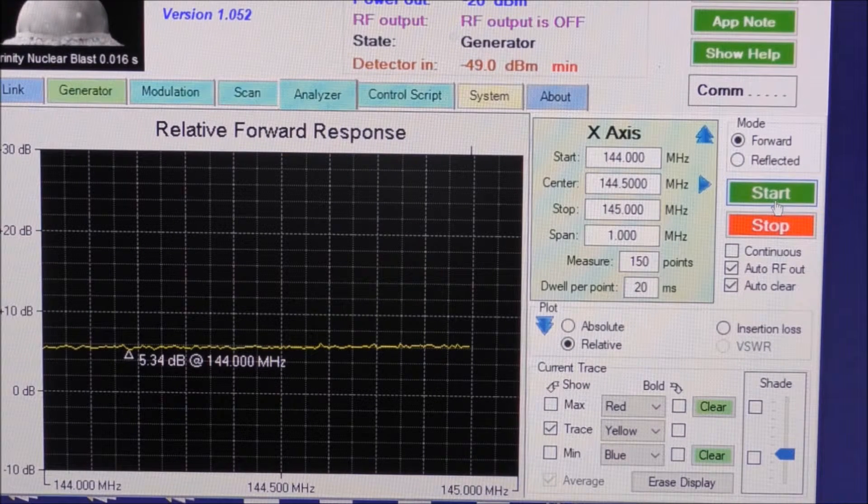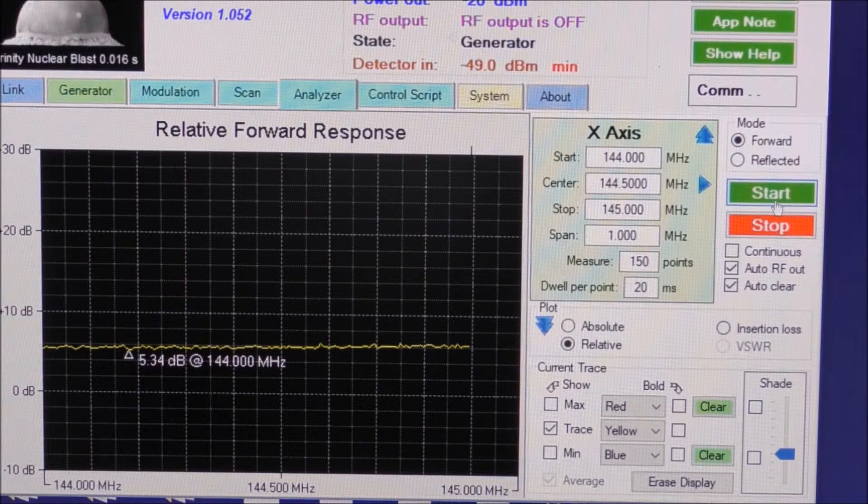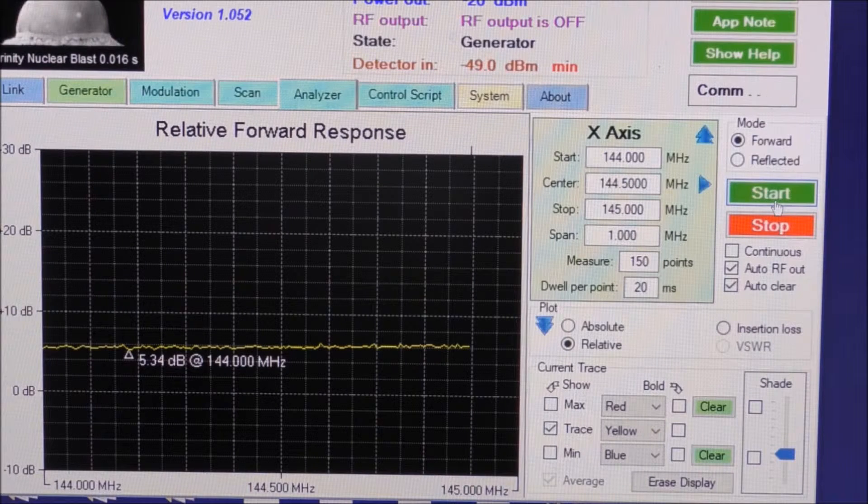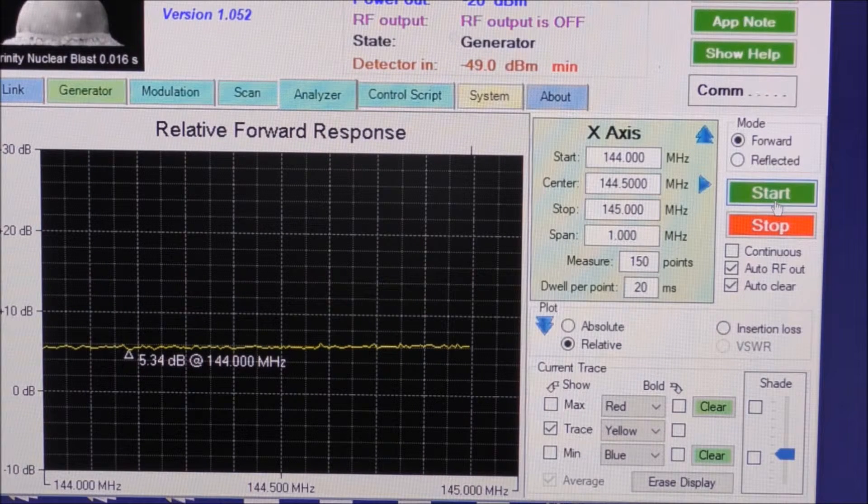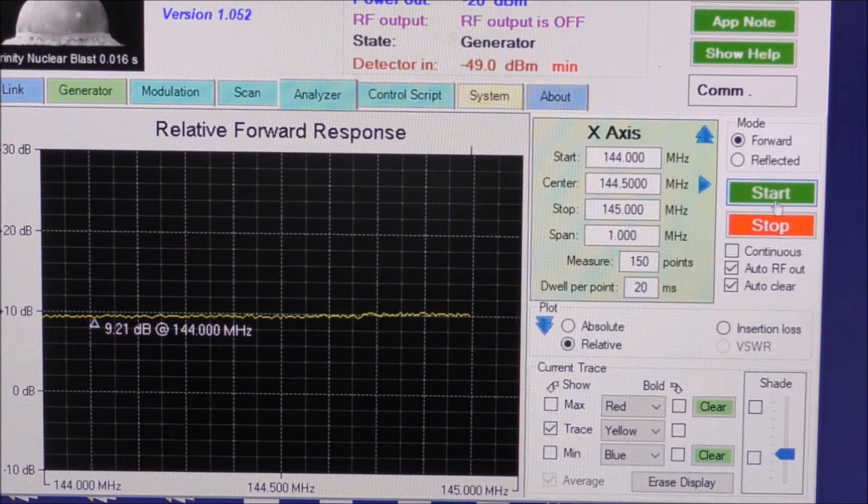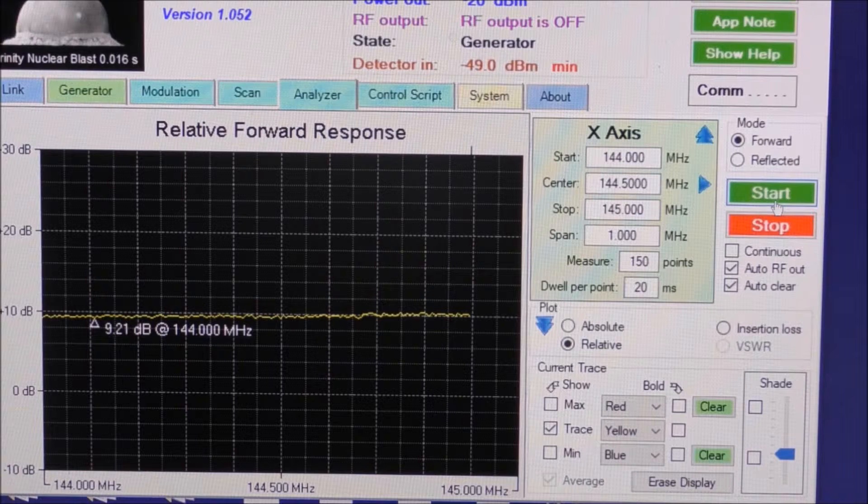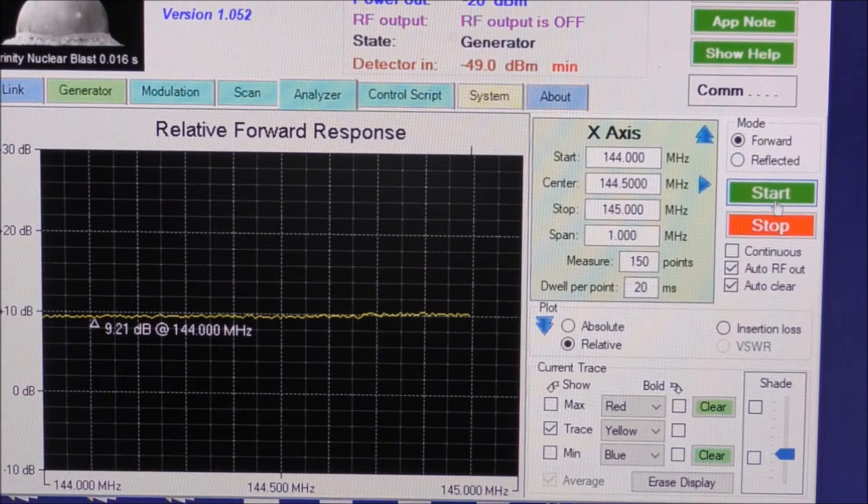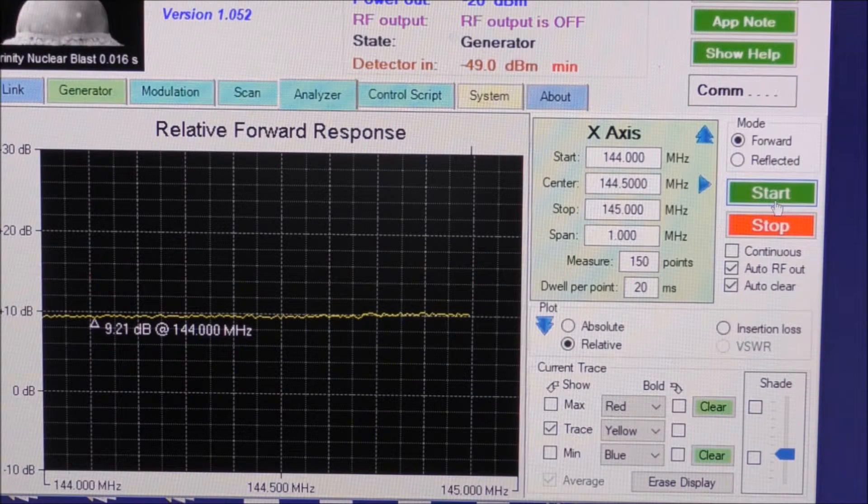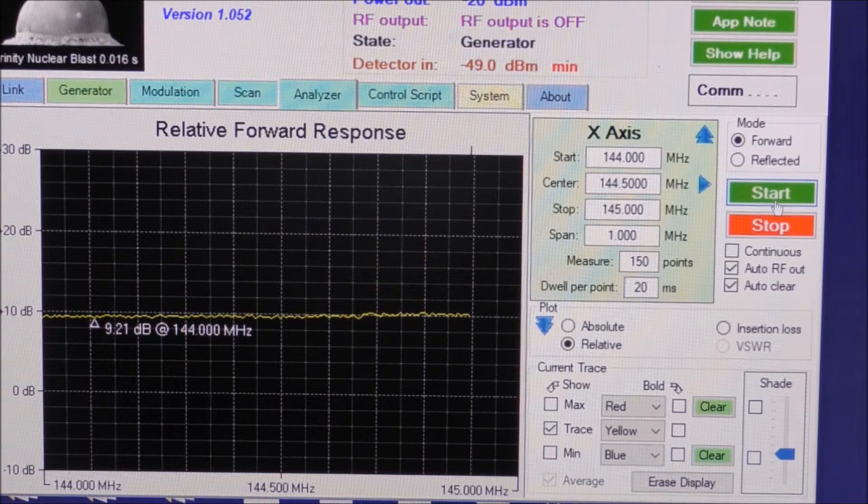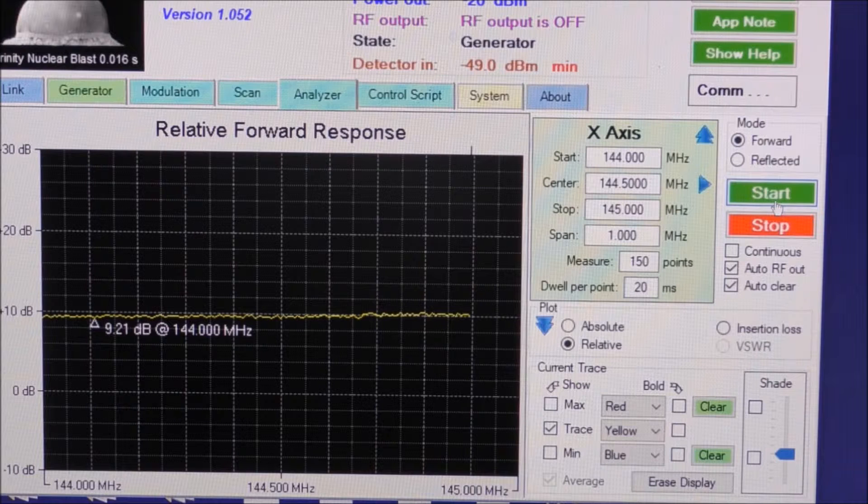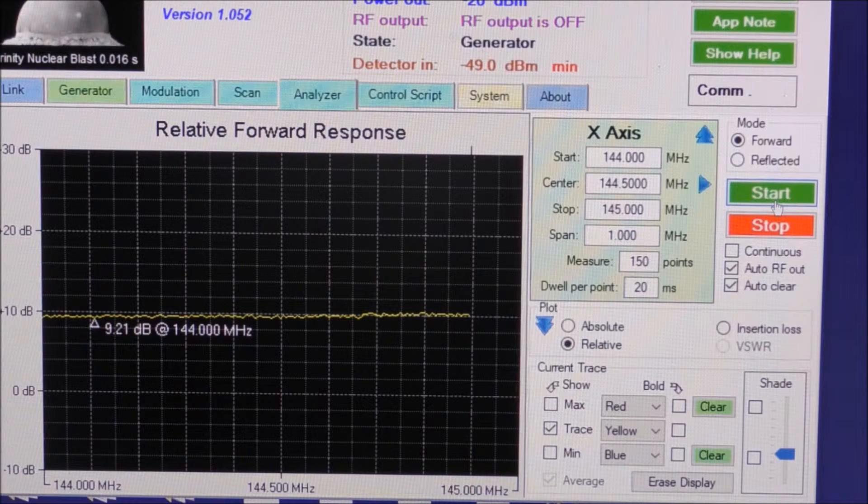Now what we need to do now is increase the gain pot assuming that I'm turning it the right way. Now that should be maximum gain. So if we run the test again we can see the line has now increased to 9.21 dB which is much much lower than the rated or the specifications are for this particular preamplifier. The gain of course being again a typical max gain 18.5 minimum is 10 dB at 145 MHz.